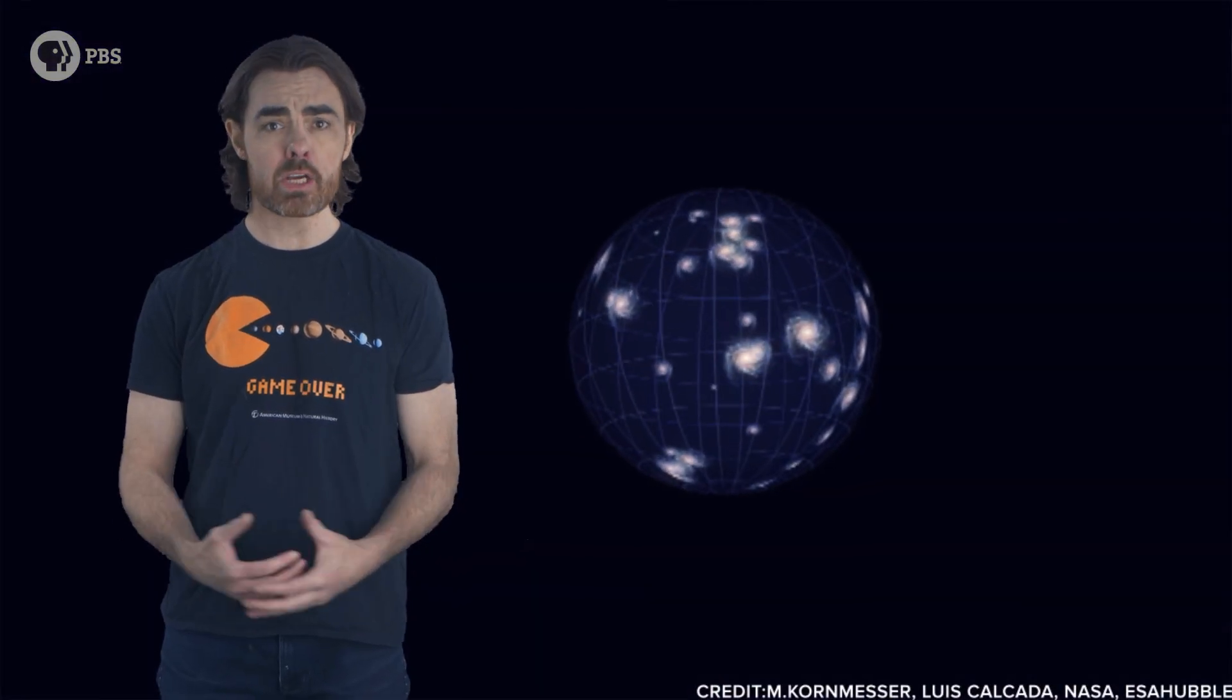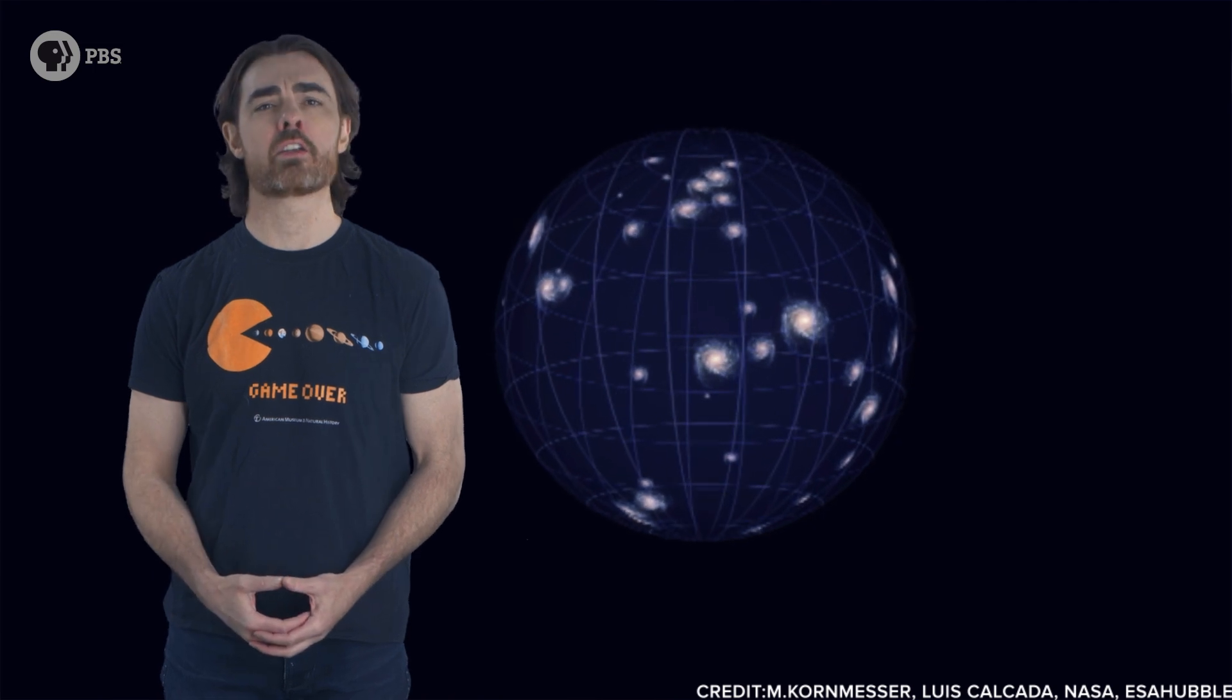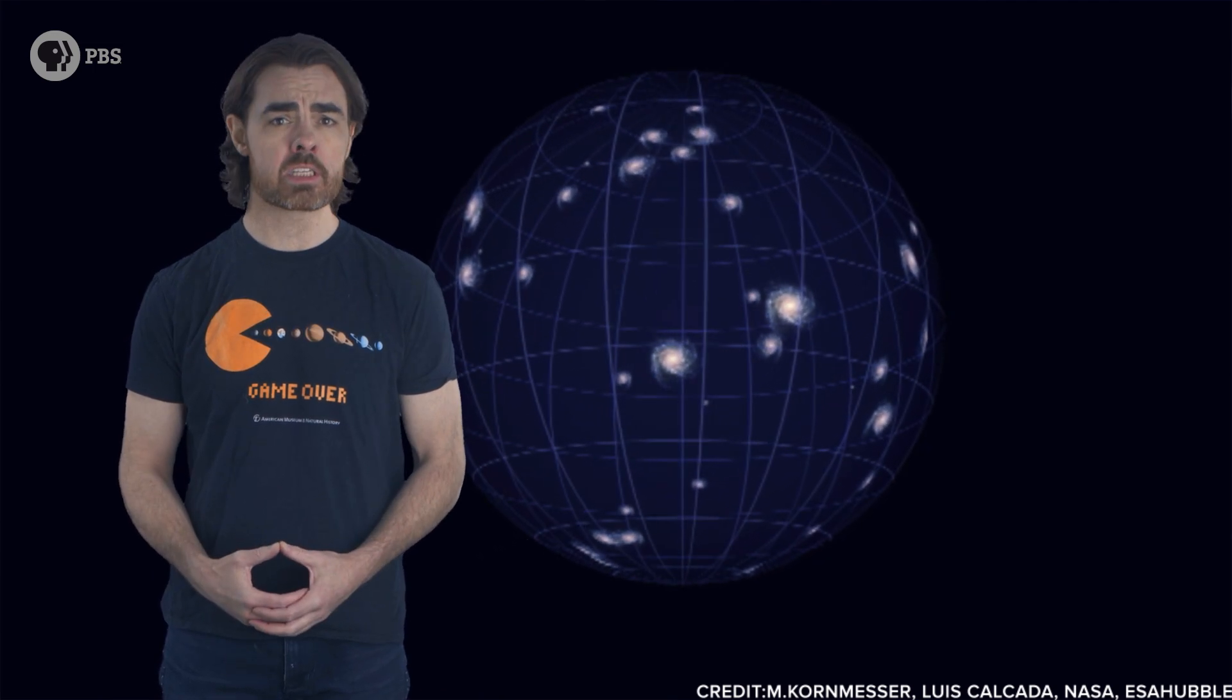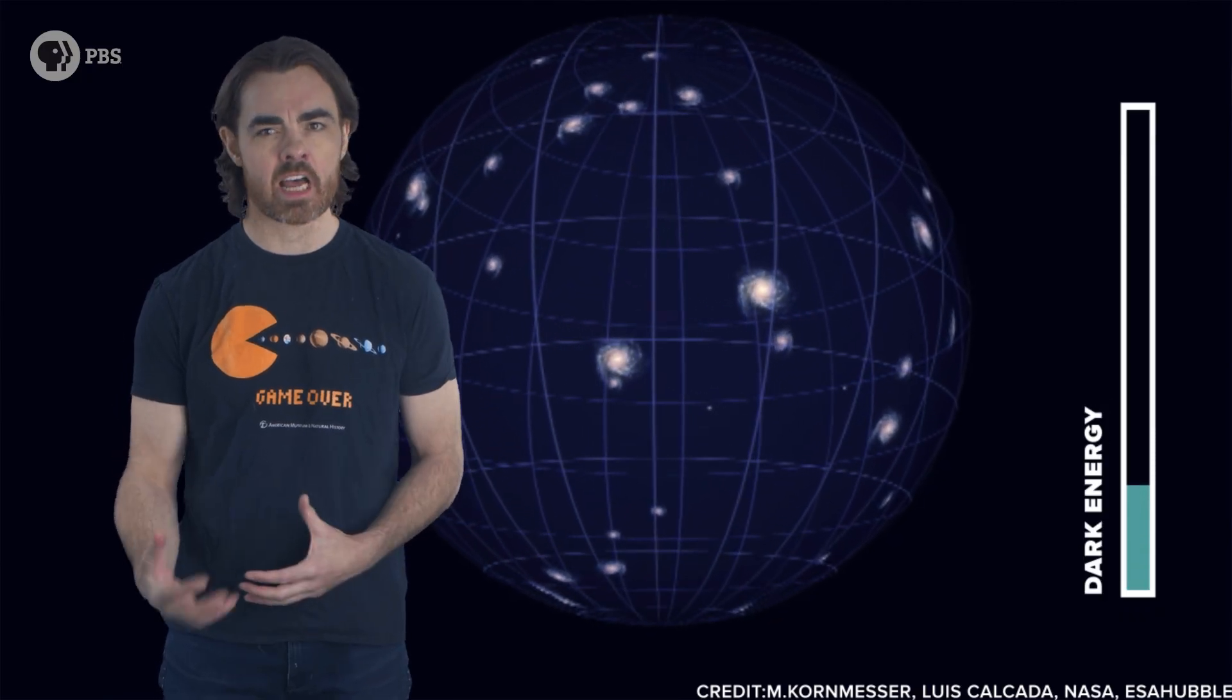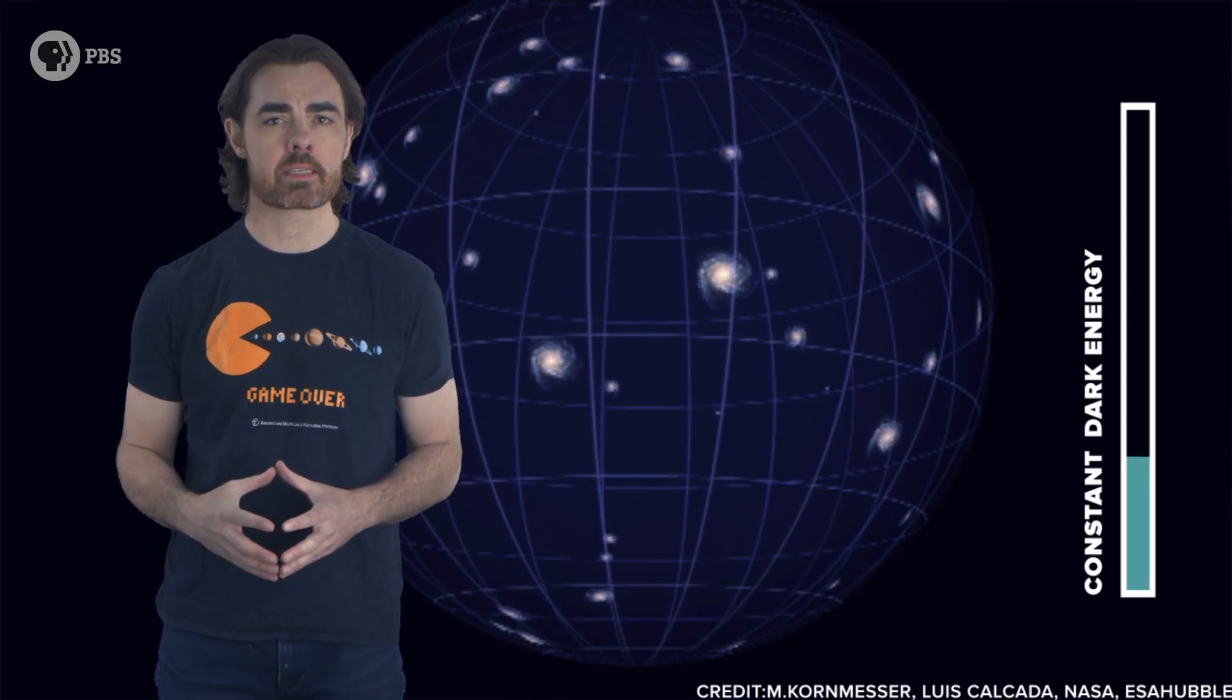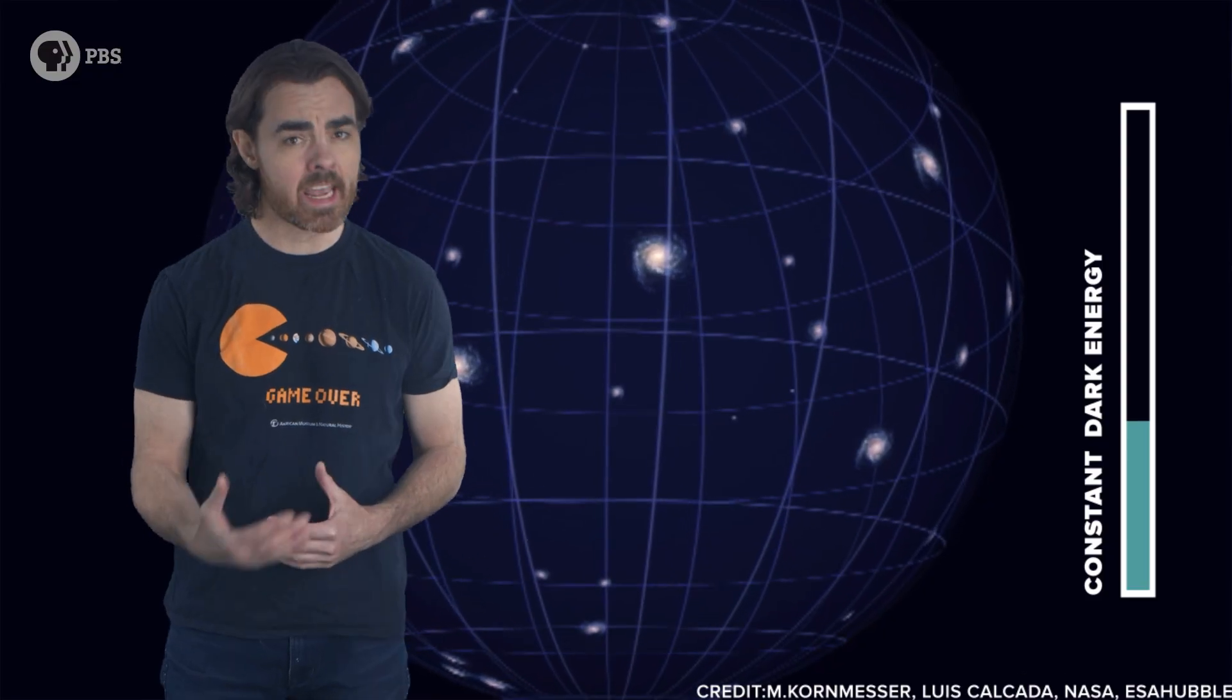The universe is expanding, and that expansion is accelerating. We don't know what's causing that acceleration, but that hasn't stopped us from giving it a name. We call this unknown influence dark energy. The observed acceleration is, for the most part, nicely described with a constant density of dark energy, the same amount of this stuff in every block of space. Which means if you increase the volume, you increase the overall amount of dark energy, hence the accelerating expansion.